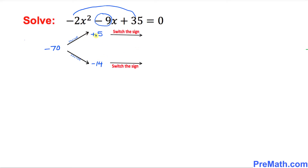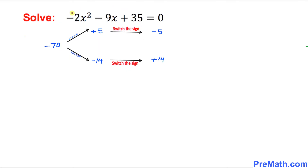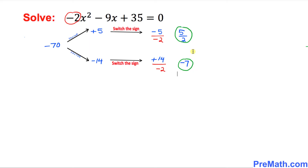In the next step we are going to switch the sign, so this positive 5 becomes negative 5 and this negative 14 becomes positive 14. Our final step is dividing these numbers by our leading coefficient, so we divide by negative 2. That gives us 5 over 2 and negative 7. So our solutions turn out to be 5 over 2 and negative 7.